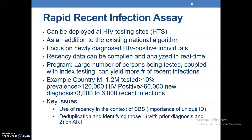For example, in Country M, if 1.2 million are tested with a prevalence of 10 percent, then we get 120,000 HIV-positive. Of these, if 60,000 are new diagnoses, then we have 3,000 to 6,000 as recent infections. The key issues are the use of recent infections in the context of case-based surveillance, the importance of a unique ID, and de-duplication in identifying those with prior diagnosis and on ART.